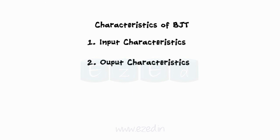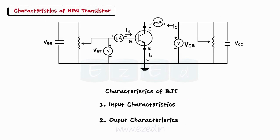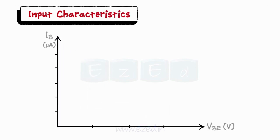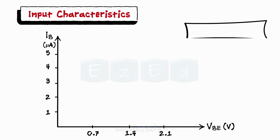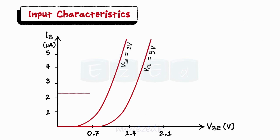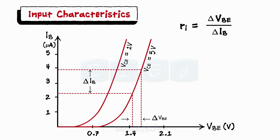Now let's study the input characteristics, plotted as IB versus VBE, keeping VCE constant. The output remains zero until the input reaches 0.7 volts, after which the base current increases as shown. When we take the ratio of change in voltage VBE to change in current IB, we get the input resistance of the BJT, measured in ohms.